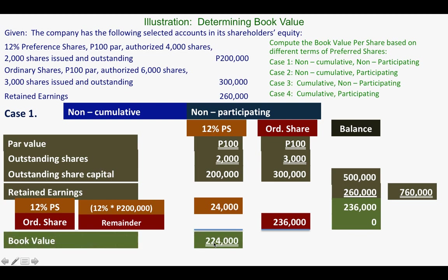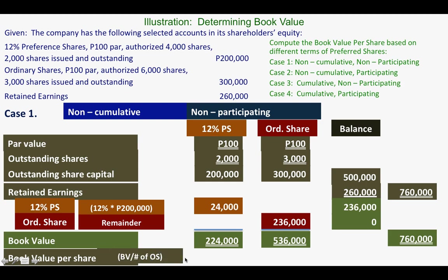The total book value for preferred share is 200,000 plus 24,000, giving 224,000. For ordinary share, it's 300,000 plus 236,000, giving 536,000. To get the book value per share, we divide by the outstanding shares. So, 224,000 divided by 2,000 gives 112, and 536,000 divided by 3,000 gives 178.67.